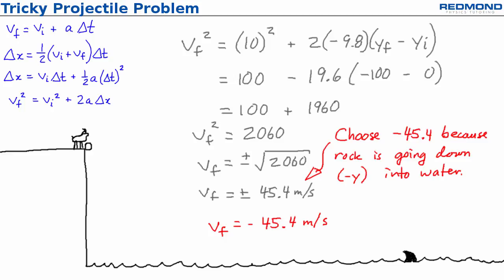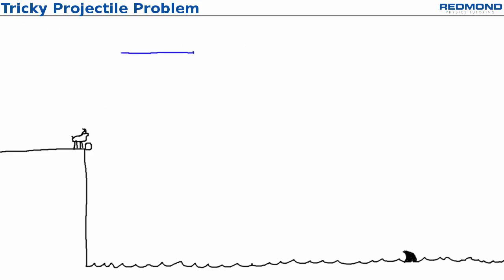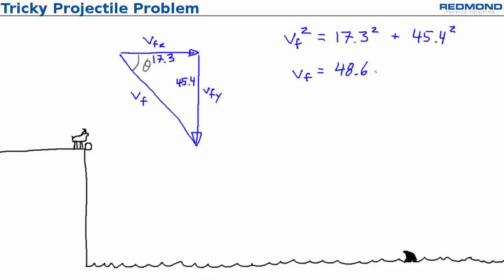Now Billy has v final x equals 17.3 meters per second and v final y equals negative 45.4 meters per second so he can find the speed, magnitude, and direction by drawing the triangle. The speed comes from the Pythagorean theorem and turns out to be 48.6 meters per second. The direction comes from the inverse tan of 45.4 over 17.3 and turns out to be an angle of 69 degrees.